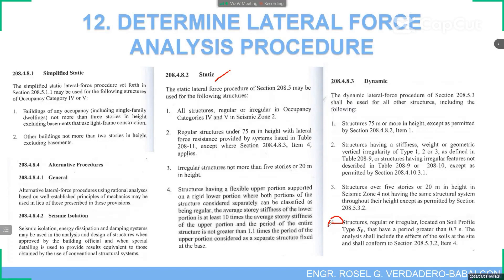Number 4 covers structures having a flexible upper portion supported on a rigid lower portion, where both portions considered separately are classified as regular. The average story stiffness of the lower portion is at least 10 times the average story stiffness of the upper portion. The period of the entire structure is not greater than 1.1 times the period of the upper portion, considered as a separate structure fixed at the base.